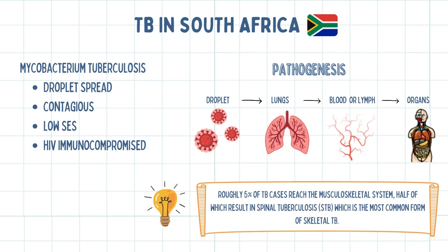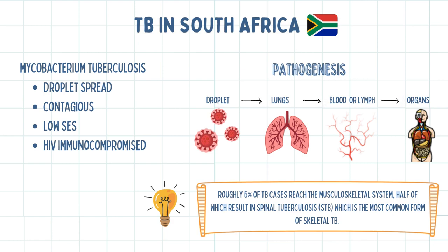Tuberculosis is an airborne disease spread by droplets containing Mycobacterium tuberculosis. South Africa is burdened with one of the worst tuberculosis epidemics in the world. TB is easily spread, especially in areas with poor socioeconomic status. These unfavorable overcrowded living conditions, coupled with the high prevalence of HIV in our country, increases susceptibility to TB contraction due to immunosuppression.